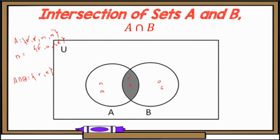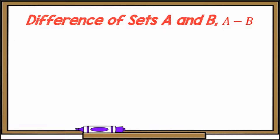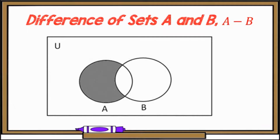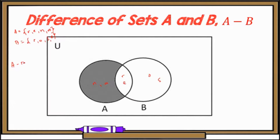Next, let's look at the difference of sets A and B — A minus B. This is the set of all elements in A that are not in B. Set A equals R, E, N, A and set B equals R, O, S, E. The common elements R and E are in the intersection and are removed from A. N and A will be left in set A's region, while O and S remain in set B. For A minus B, we have the elements N and A.